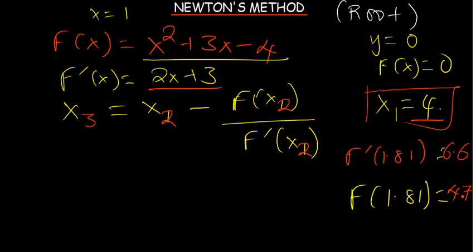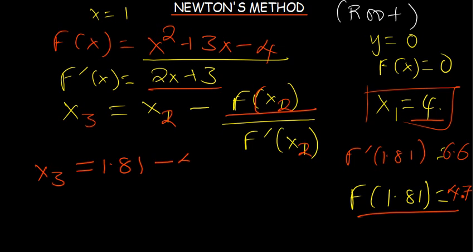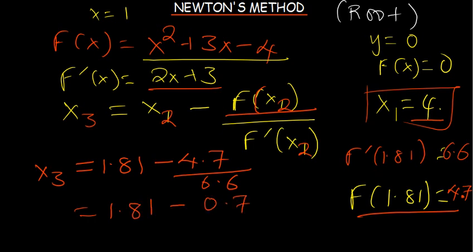Our x₃ is calculated as x₂ minus f(x₂)/f'(x₂). With x₂ = 1.81, f(1.81) = 4.7, and f'(1.81) = 6.6, we get 4.7 ÷ 6.6 ≈ 0.7. So x₃ = 1.81 - 0.7 = 1.11.